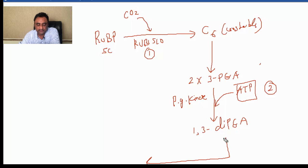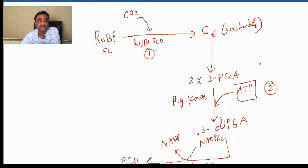Next, the 1,3-di-PGA in the presence of another assimilatory power, NADPH2, gets converted into PGAL (glyceraldehyde). The enzyme is dehydrogenase. This is the third step, which is reduction, because the conversion of acid into aldehyde is reduction.